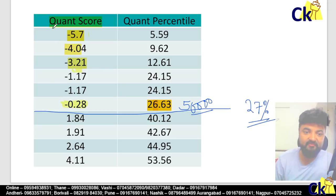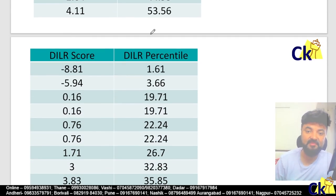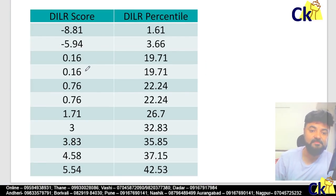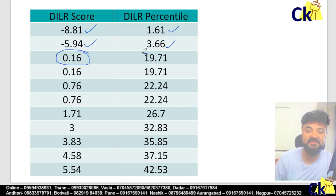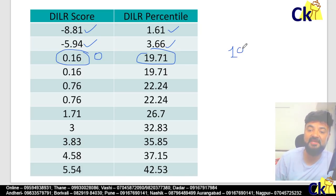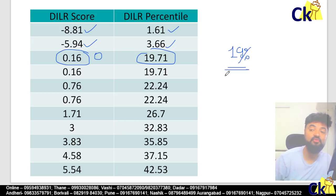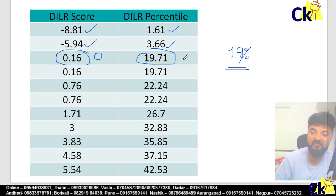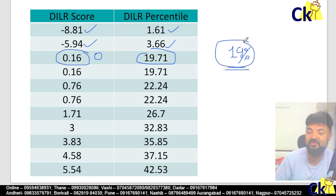If you leave the paper blank, you get 27 percentile in quant. For DI logic, 0 will be approximately 19 percentile. This means in DI logic, the public did not get lost — not many people failed their score, they took a fight on the exam day. So 19 percentile is what you will get if you score 0 marks, if you leave the paper blank.